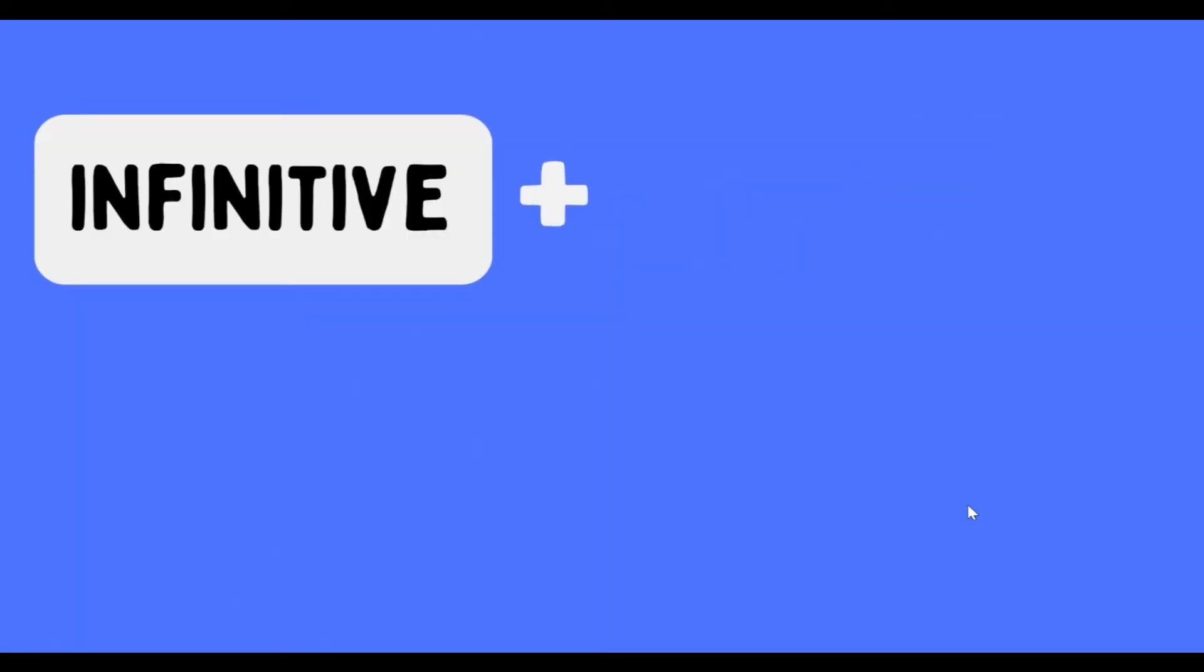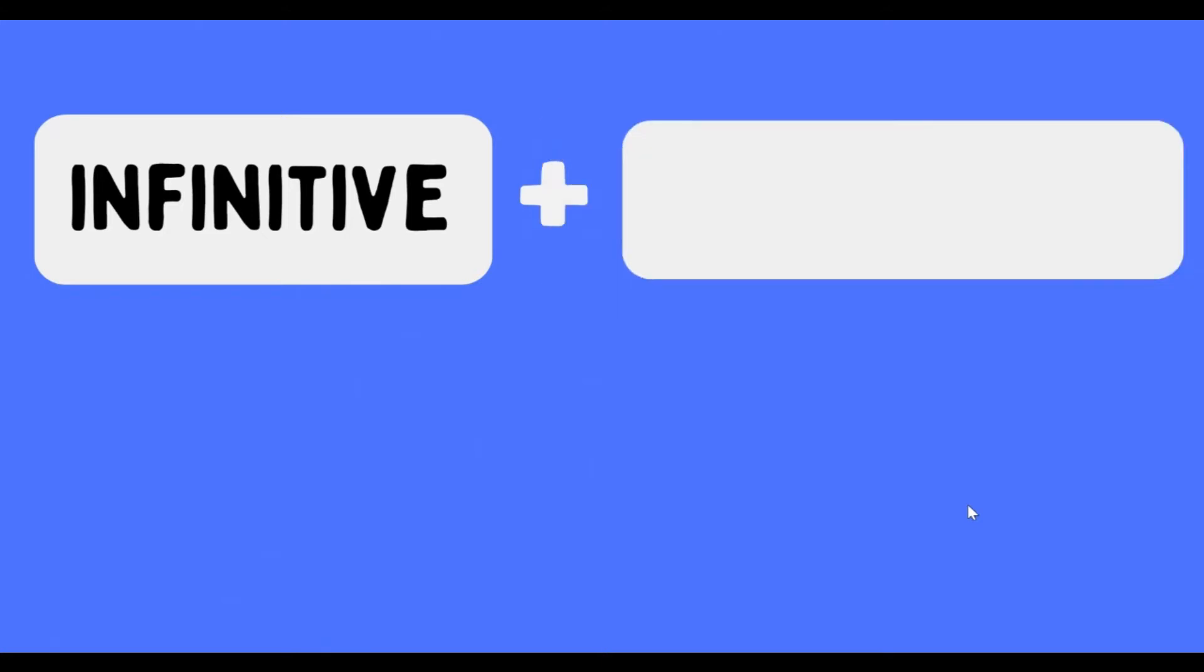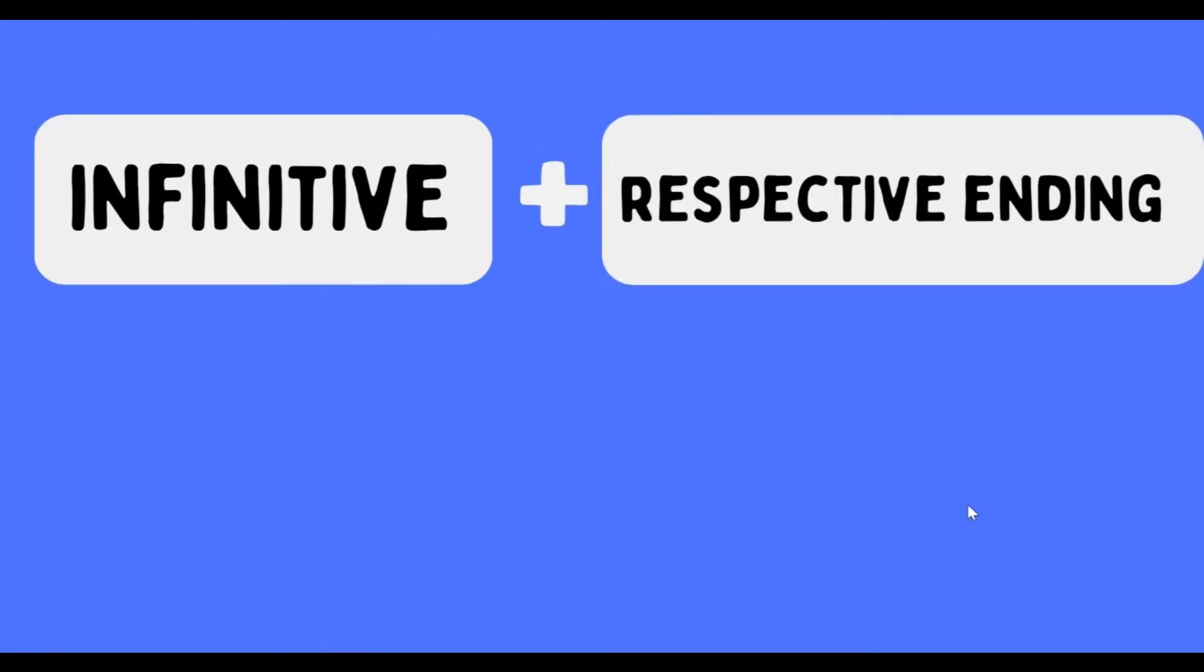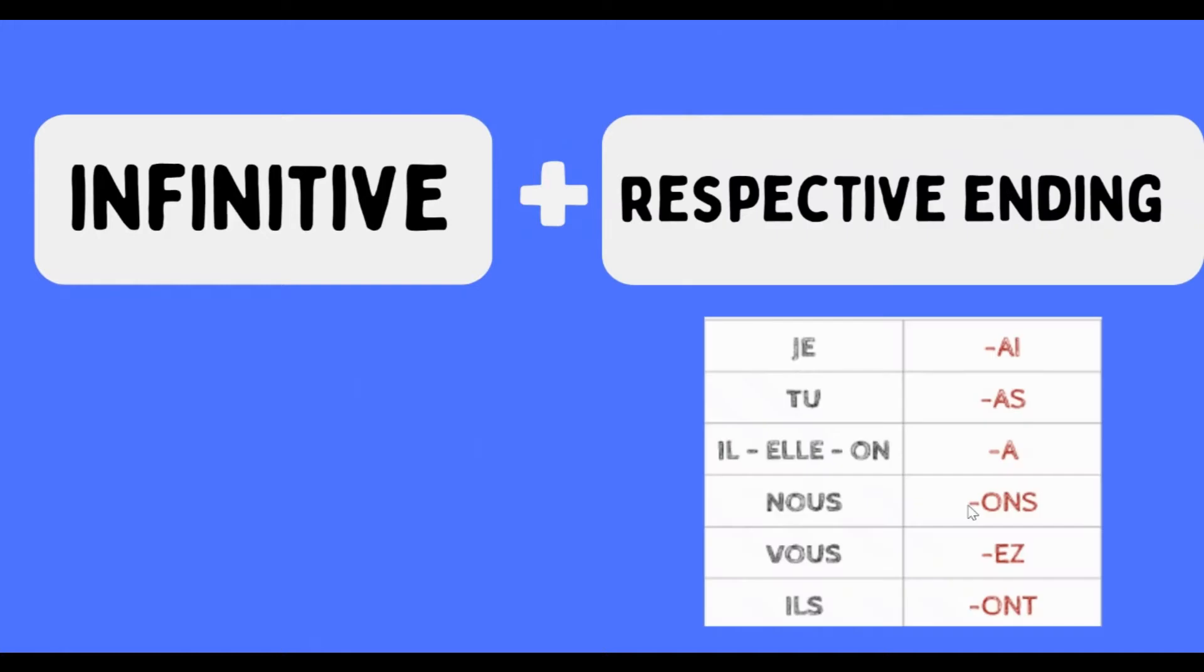Now let's look at how to form the future simple tense. The future simple tense is quite easy to make - it's simply the infinitive plus the respective ending. So let's look at the different endings.